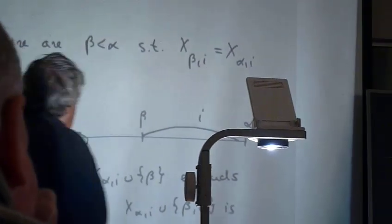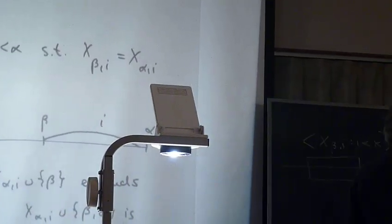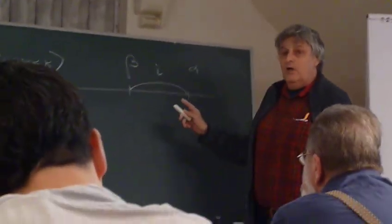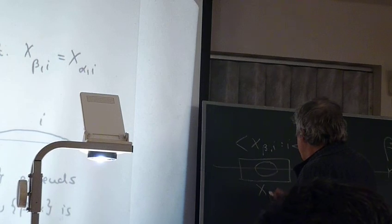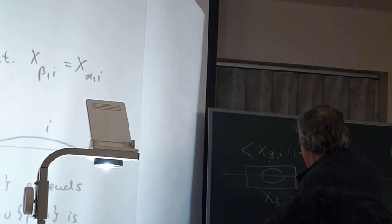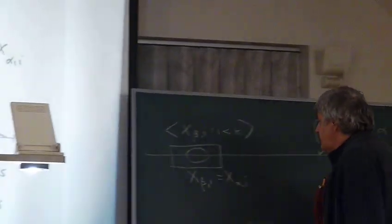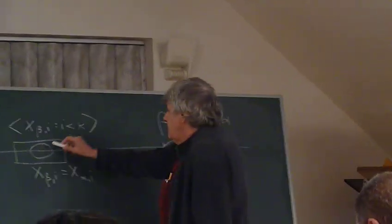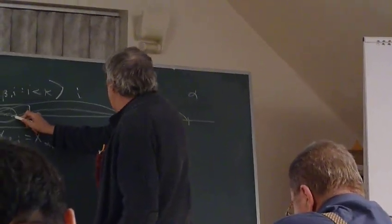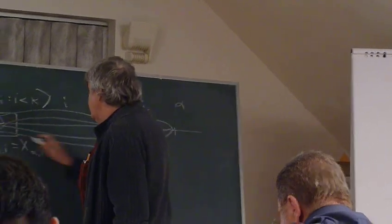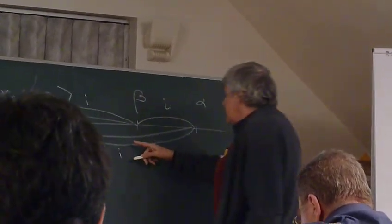And now we are almost done. The edge between beta and alpha has some color. If we consider the i-th member of these identical sequences, this is homogeneous in color i. These edges also have color i, and so have these edges.